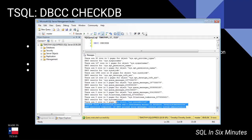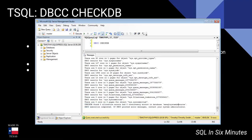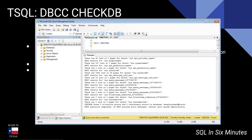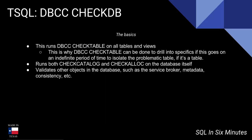The key thing to look for is at the very bottom — you'll see 'CheckDB found zero allocation errors and zero consistency errors in the database.' If there's an error message, it says contact your system administrator — or more accurately, contact your DBA. If you see zero consistency errors and zero allocation errors, that's good.